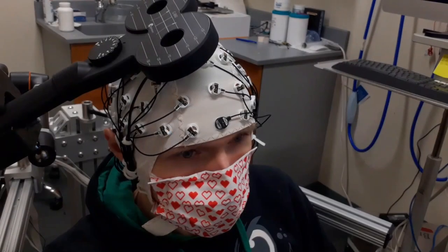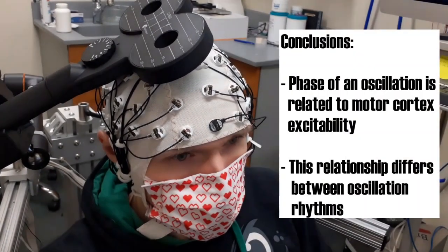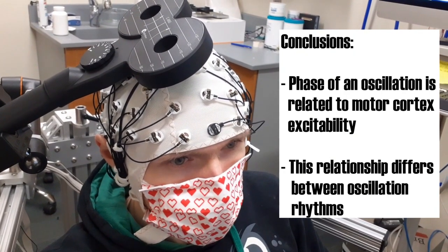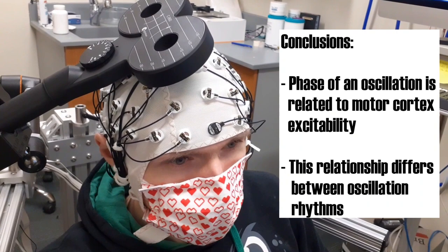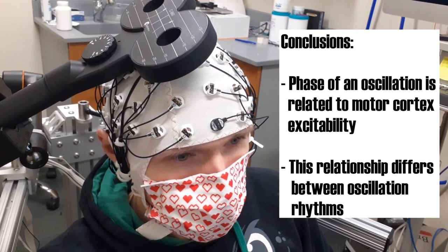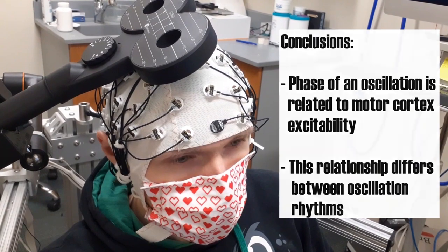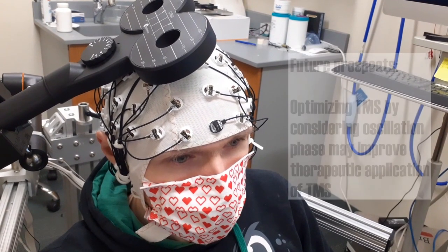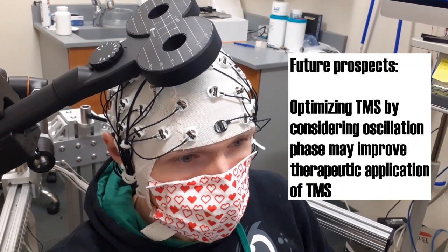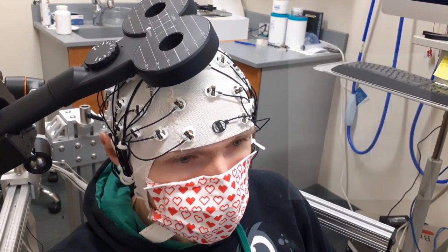Our results show that the phase of a cortical oscillation is crucial for determining the excitability of the brain. Furthermore, this relationship is distinct for different frequencies. Thus, considering phase is important if TMS is to be used optimally, and taking phase into account may potentially improve the efficacy of TMS in a therapeutic setting for the treatment of neurological and psychiatric disorders.